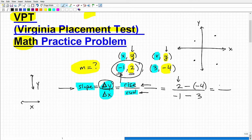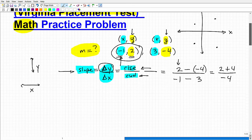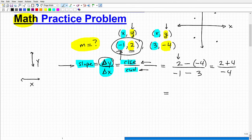So let's finish this up. 2 minus -4 is going to be 2 plus 4. And -1 minus 3 is going to be what? Negative... We can reduce this fraction: -3/2. All right, let's put that negative value right here. This is our slope.